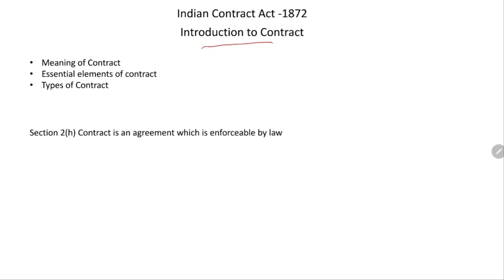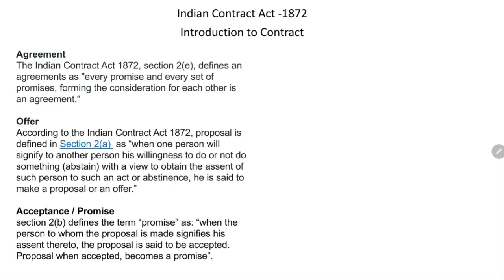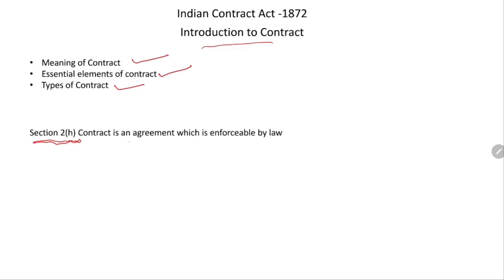Let's look at the case of contract. Three important points we need to know: what is a contract, the essential elements of a contract, and the types of contract. Section 2H of the Indian Contract Act defines contract as an agreement which is enforceable by law. There are two elements for contract: one is there should be an agreement, and the second is that agreement should be enforceable by law.